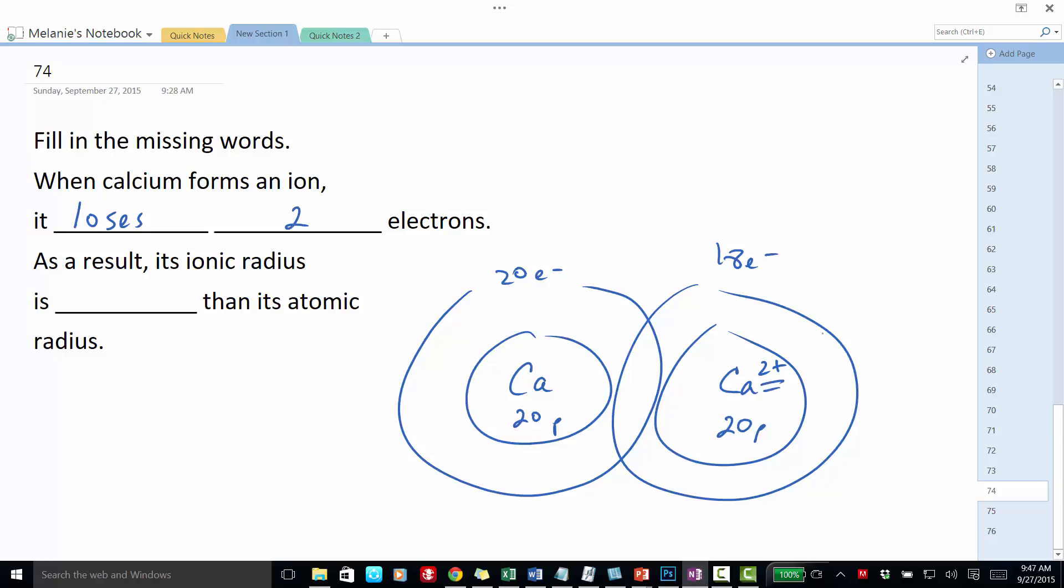So its ionic radius is going to be smaller because it has fewer electrons, and there's less repulsion among the electrons, making the ionic radius smaller than its atomic radius.